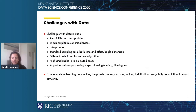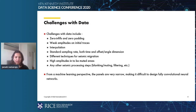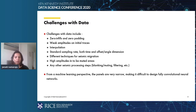We have many challenges with the data. Seismic data is inherently very noisy, and the patterns of noise are not the same on every survey. Deeper reflections are always harder to detect. Other challenges include zero infill, zero padding, different interpolation or sampling rates in both the time and offset domains. Different techniques for seismic migration can introduce more artifacts. High amplitudes in to-be-muted areas can cause low or high-frequency artifacts, and if other seismic processing steps are applied, they are applied differently to different surveys. From a machine learning perspective, the panels are very narrow, making it difficult to design fully convolutional neural networks.